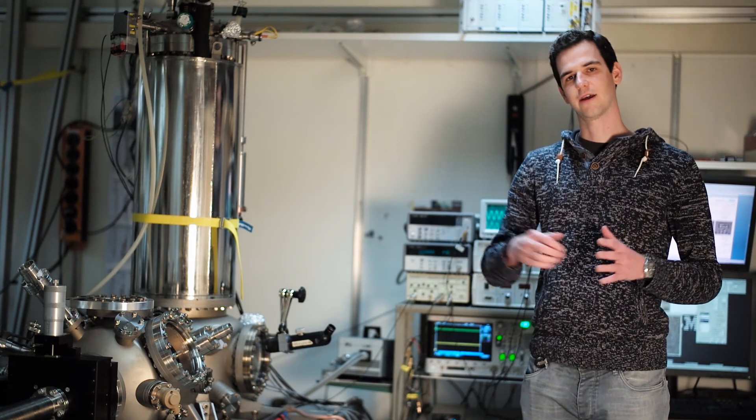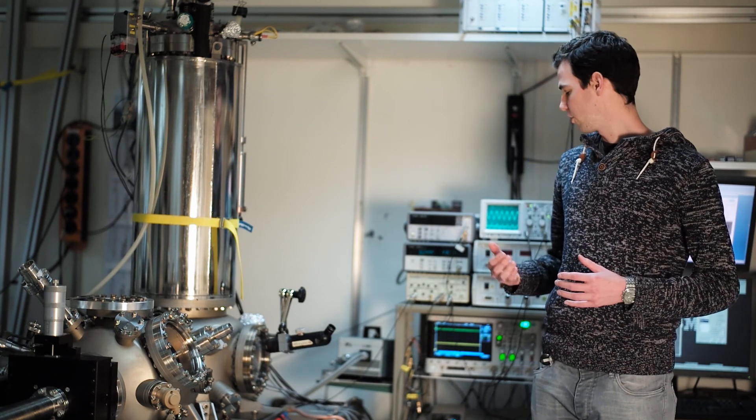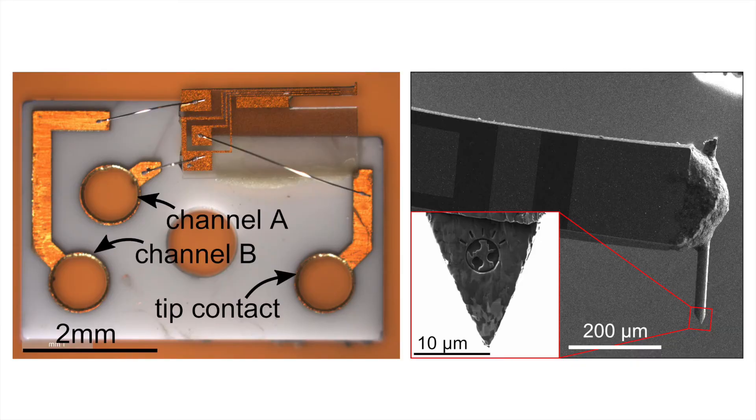The setup also includes the electronics we need to scan and control the scanners and record the measurement signals. As a sensor, we are using a Q-plus sensor, which was developed by Franz Giessibl. A Q-plus sensor is essentially a modified design based on a quartz crystal tuning fork that you typically find as a timekeeping element in wristwatches. With this sensor, we are able to oscillate the cantilever with amplitudes down to a hundredth of a nanometer, and at the same time collect the tunneling current — combining STM and AFM capabilities in one device with unimpaired performance.